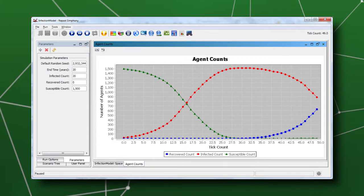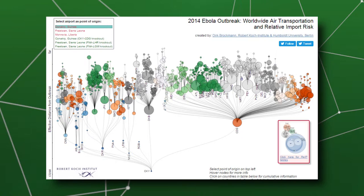The susceptible agents try to avoid contact with infected agents. When an infected agent approaches a cell with a susceptible agent, it infects one which is randomly selected. That susceptible agent then becomes infected as well, and in turn can infect other susceptible agents.